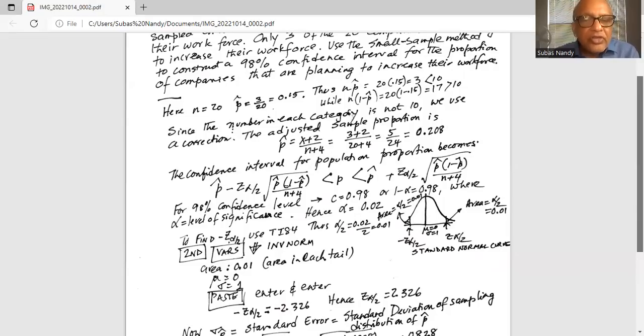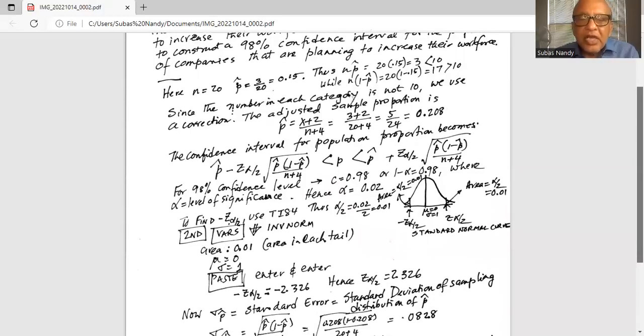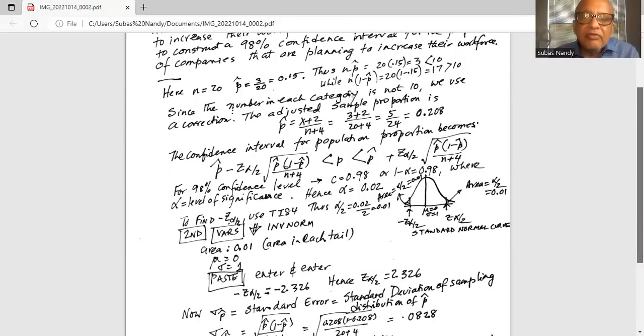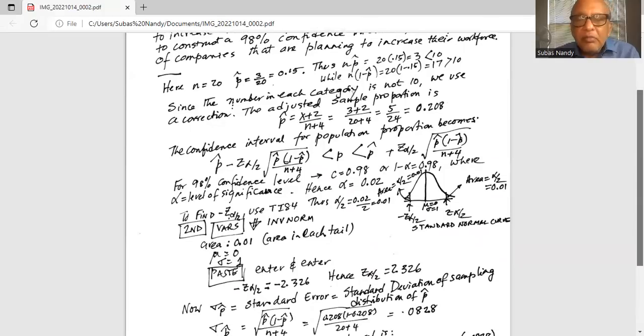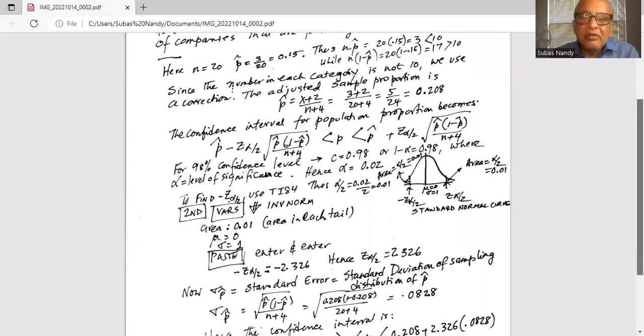We know the area in the left tail is 0.01. So we use TI-84. We press the second button, then VARS, then scroll down to INV NORM, which is number three. When we align the cursor with INV NORM, we hit enter. It's asking for area, which is 0.01. Mu is 0, sigma is 1, because we're working with a standard normal curve. We bring the cursor down on PASTE and hit enter, and we get the critical value of z.